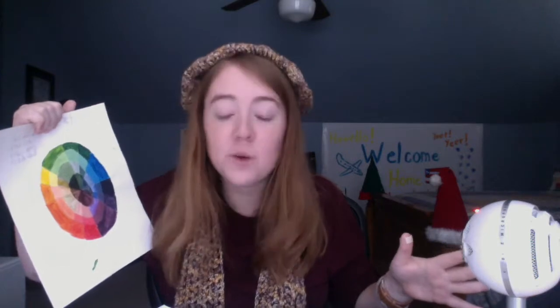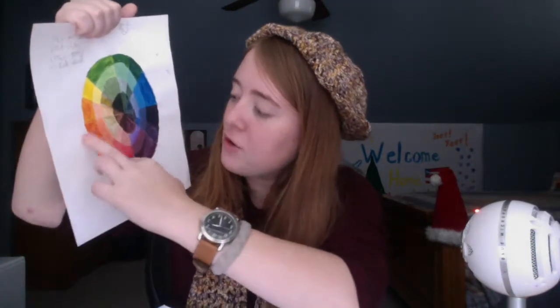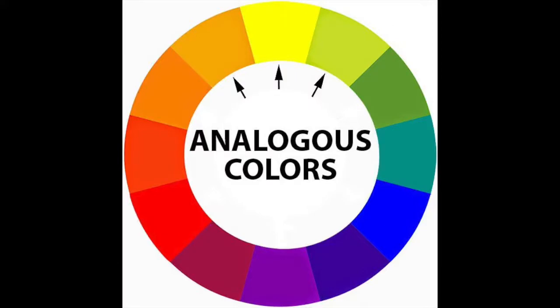This next word is hard to pronounce — it's analogous. It's your base color and the colors directly beside it. So let's say orange, and then you do like three or four colors directly beside it, so it kind of looks like the same color but just different variations of it basically.